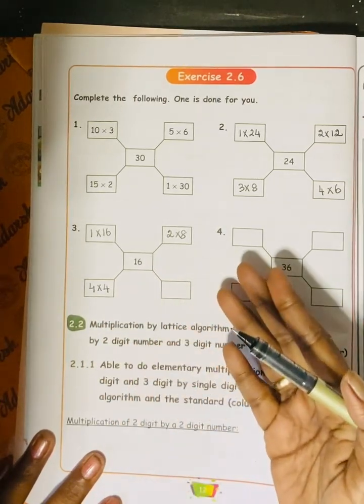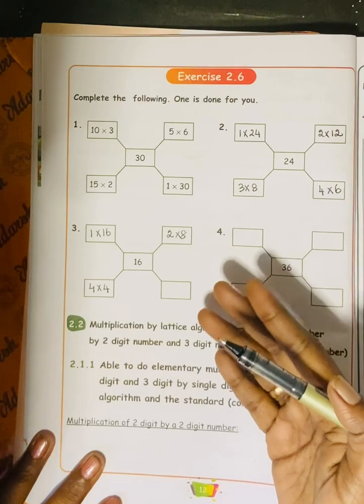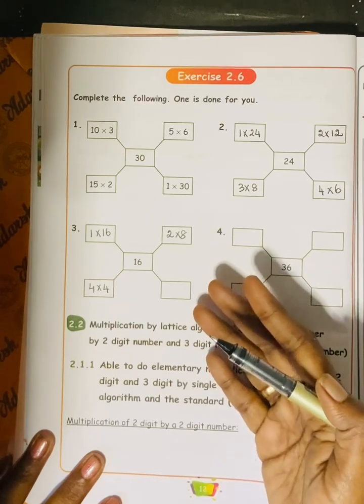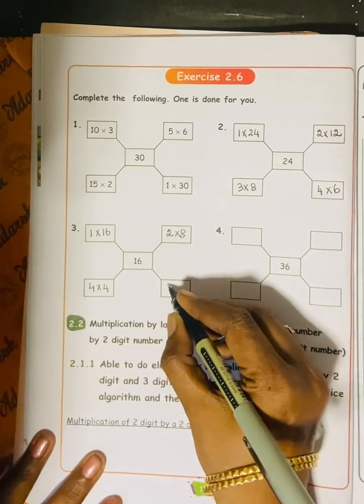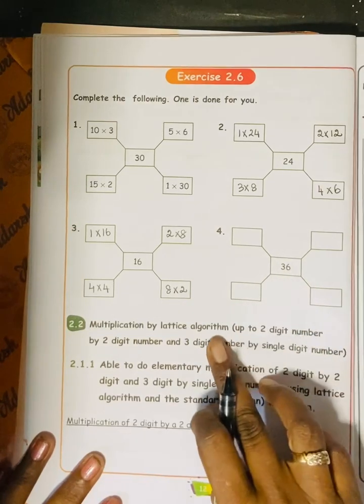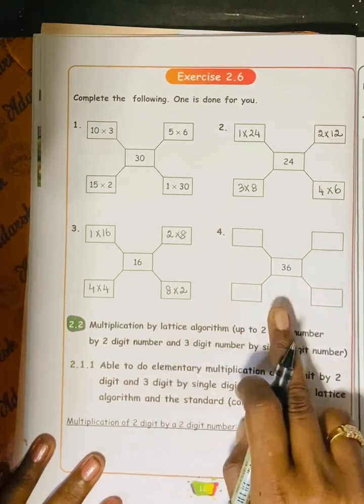Then 5 tables won't go. 6 tables, no. 7 tables, no. 8 tables, yes. 8 into 2. And the main point is that in the boxes we can fill it.